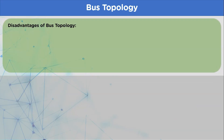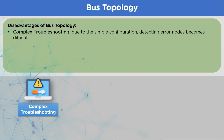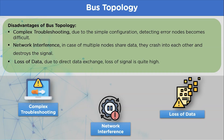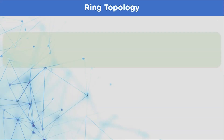Disadvantages of bus topology: troubleshooting requires special equipment to detect faults. In case of multiple data transmissions, packet collision is a frequent occurrence. Damage to transmitted data occurs due to the unavailability of network devices such as switches and repeaters. The loss of data over long-distance communication is quite high.